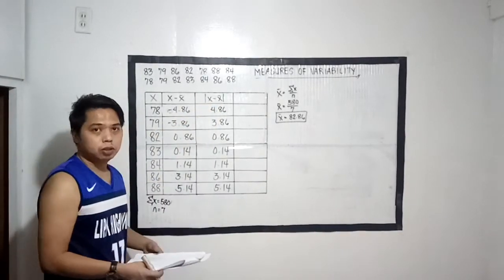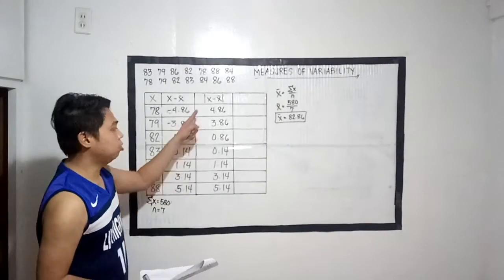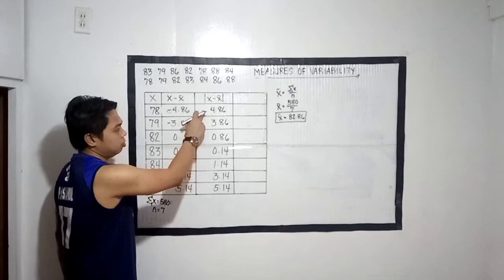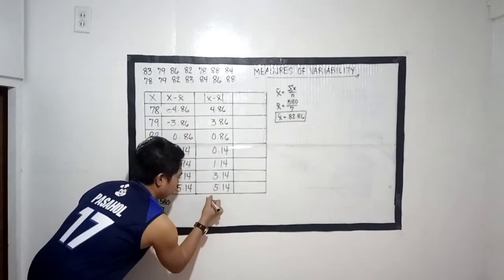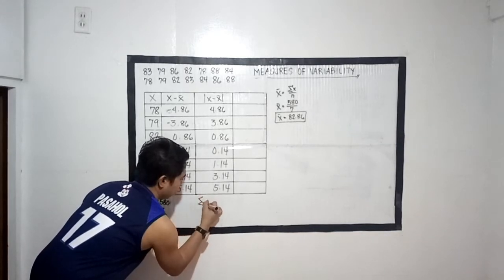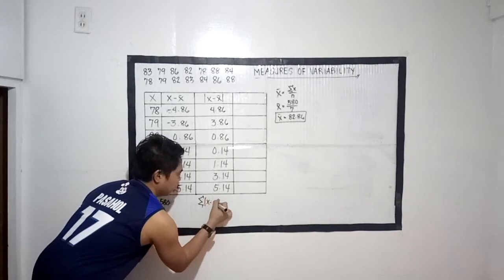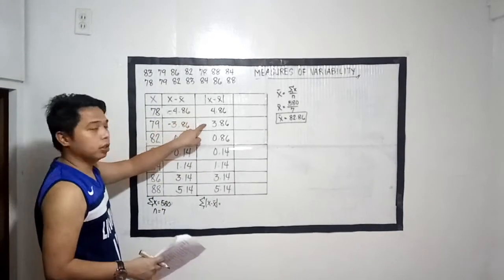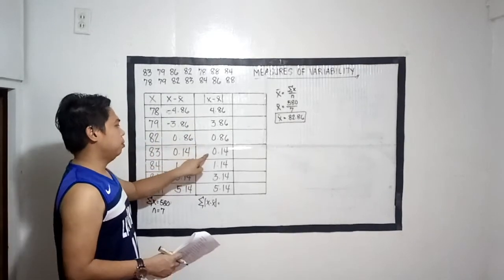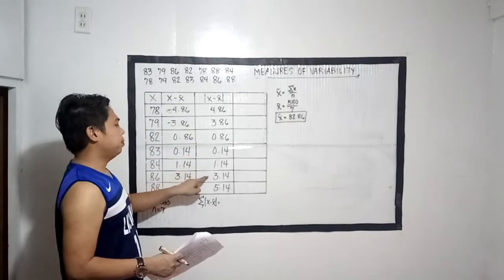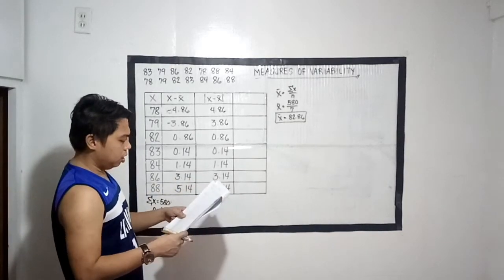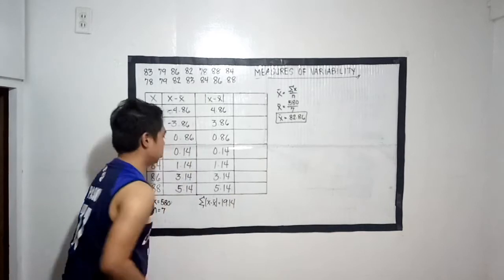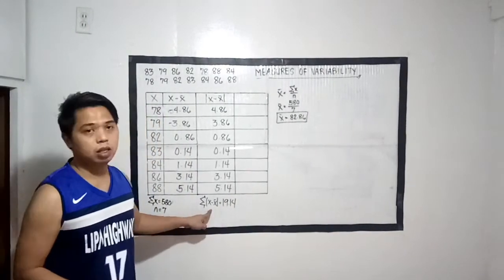Magagamit natin mamaya yung mga susunod na parameters natin. Kailangan nating kunin yung summation ng absolute value ng x minus mean. Para makuha natin yung summation, kailangan nating i-add lahat: 4.86 + 3.86 + 0.86 + 0.14 + 1.14 + 3.14 + 5.14. It is equal to 19.14. So meron na tayong summation ng absolute value ng x minus mean, and that is 19.14.